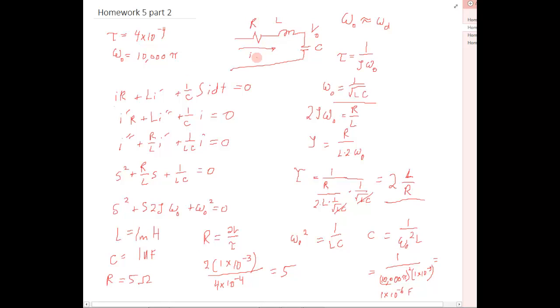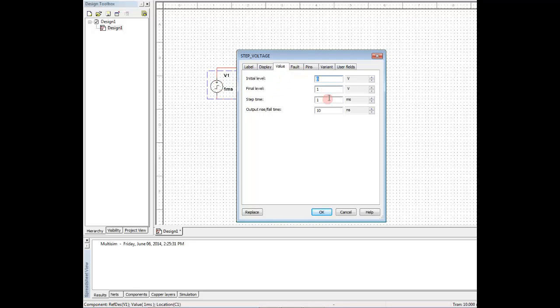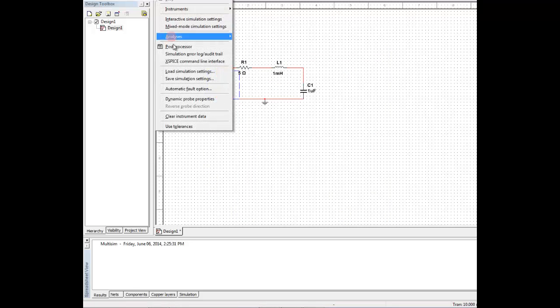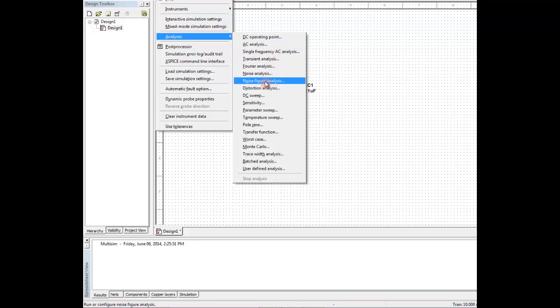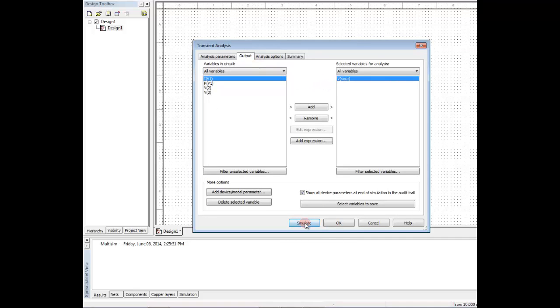So these three circuit elements in this circuit should give us the step response we're after. So let's build that in Multisim. Here we have our 5 ohm resistor, 1 millihenry inductor, 1 microfarad capacitor. This is our V out node right here. Our step voltage goes from 0 to 1 volt. So let's simulate it.